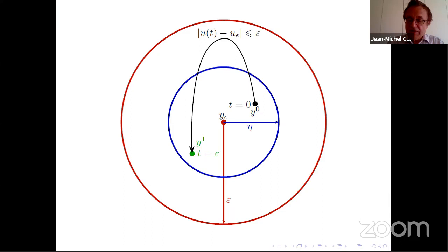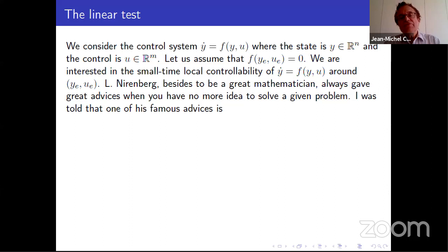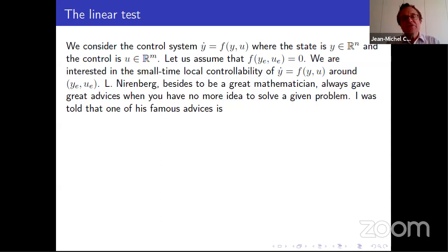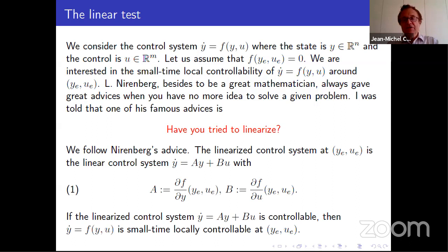There is something very important related to an advice from Nirenberg: when you have no more idea to solve a given problem, he proposed the method 'have you tried to linearize?' We have a nonlinear system, we linearize it, and get y-dot equals Ay plus Bu where A and B are given. Thanks to the inverse mapping theorem, which works also in infinite dimension, if the linearized control system is controllable, then the nonlinear system is small time locally controllable. This is very classical but very important.